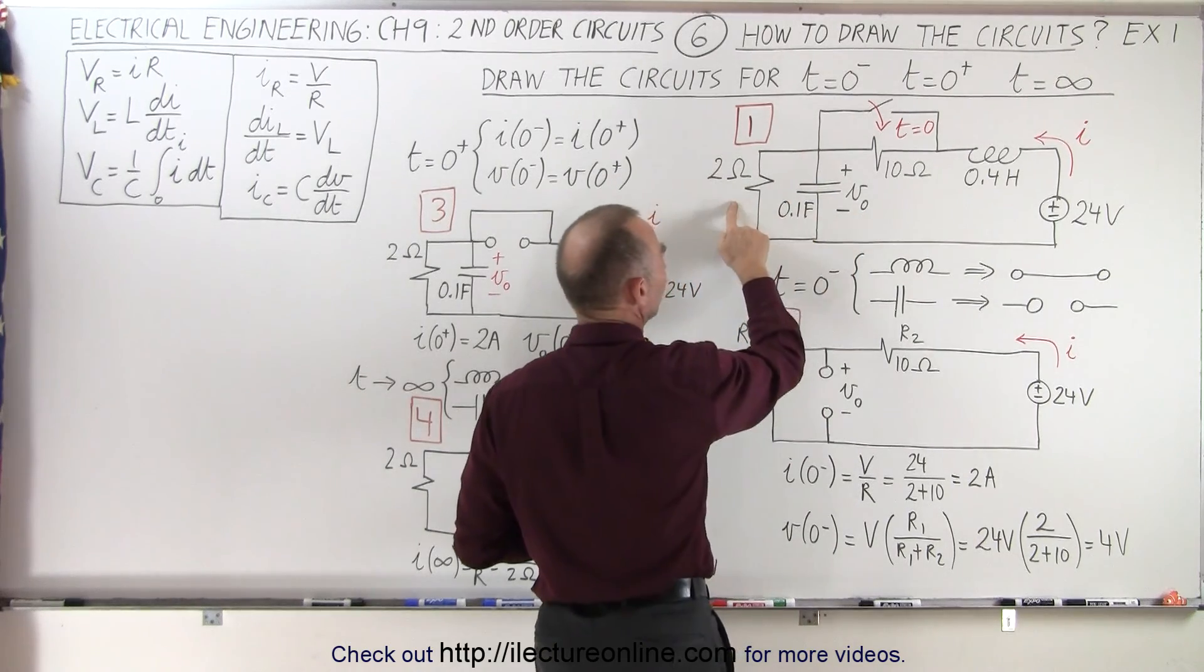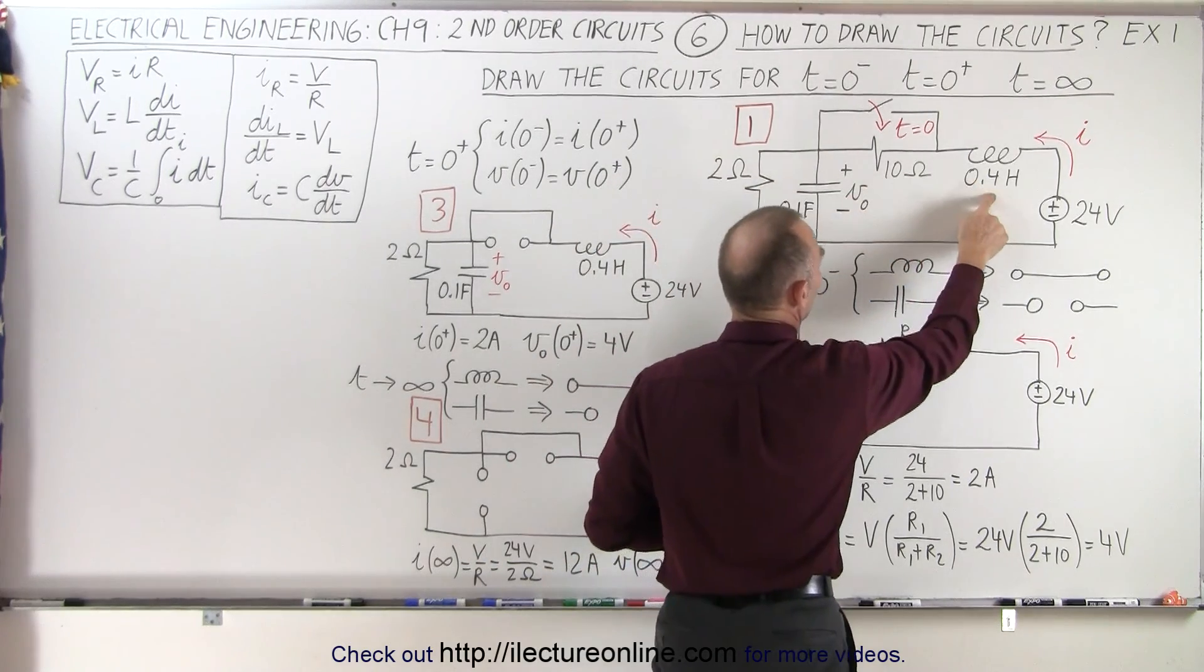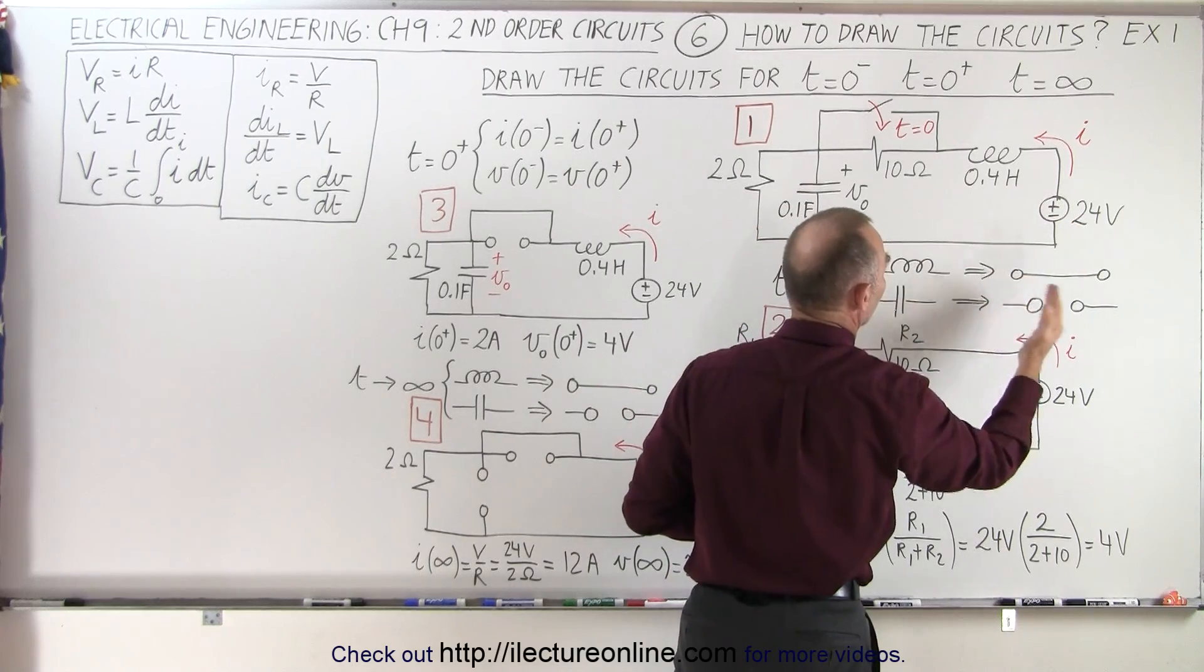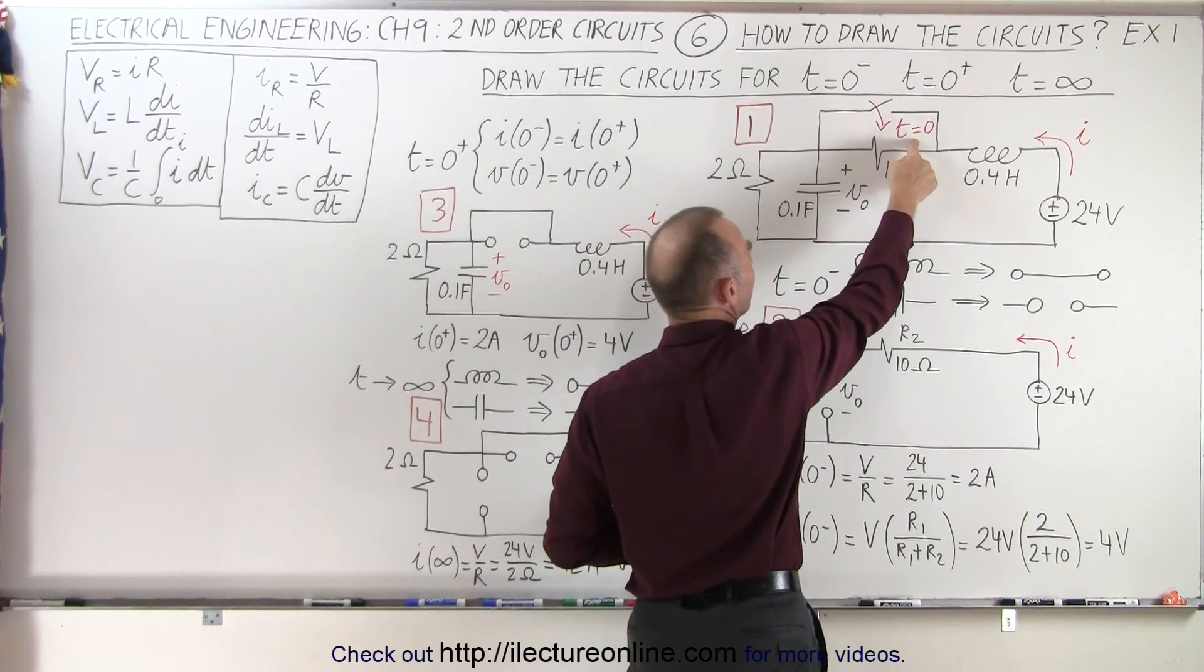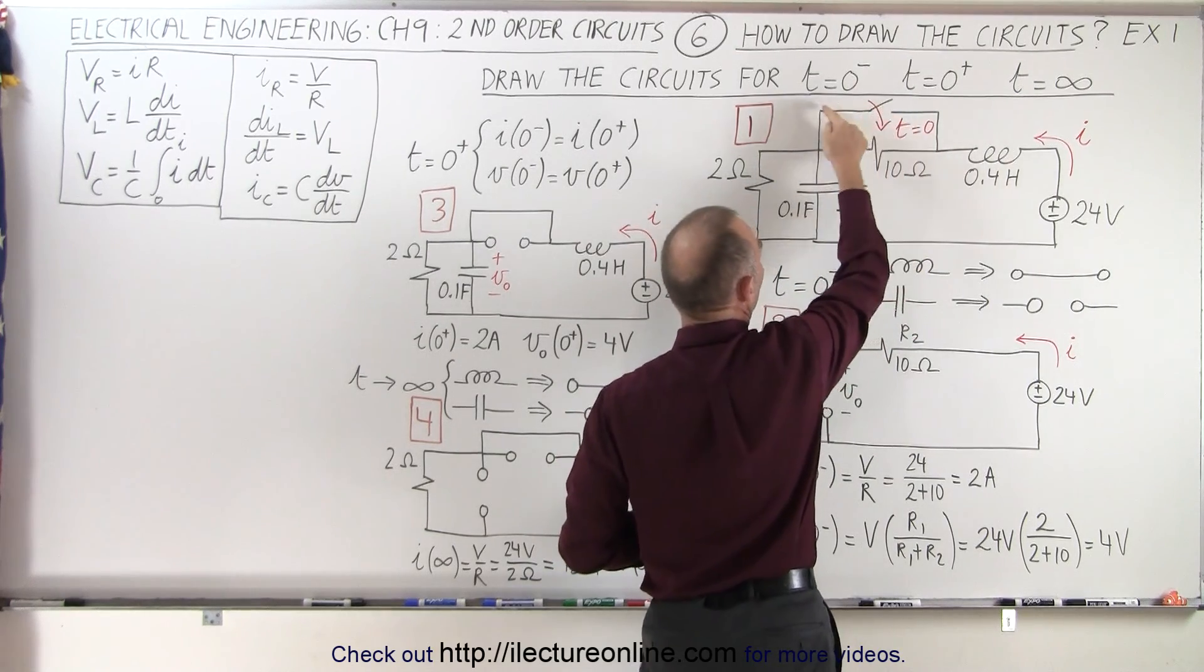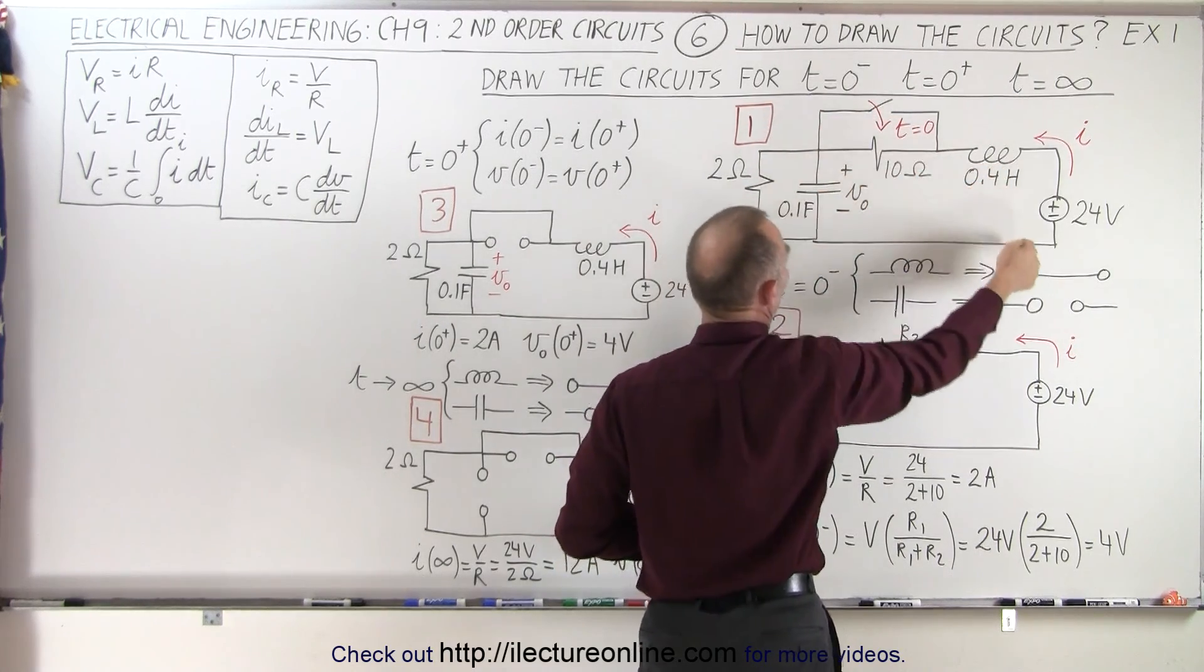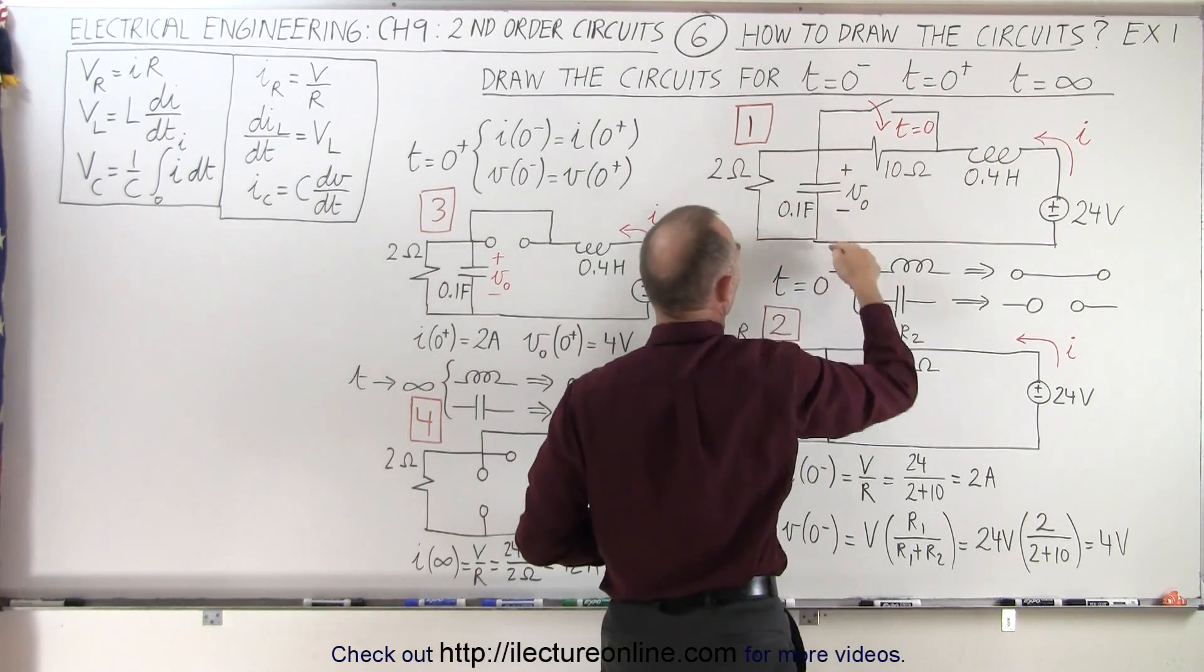Notice we have a resistor here, a resistor there, an inductor, and a 24 volt source that sends current through the circuit. Notice that here the switch is open before time equals zero. That means there's no current flowing to this particular branch. So the current flows around the circuit like this.